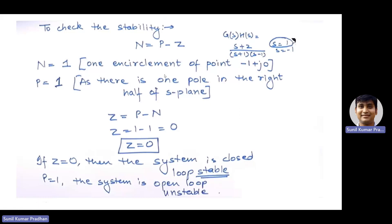We took two examples: how to draw the polar plot, how to draw the Nyquist plot, and how to determine the stability criteria. This way we can determine the polar plot and Nyquist plot. Thank you.